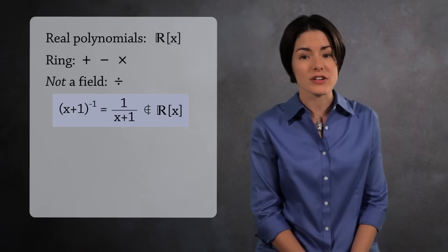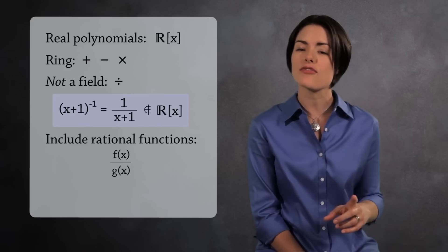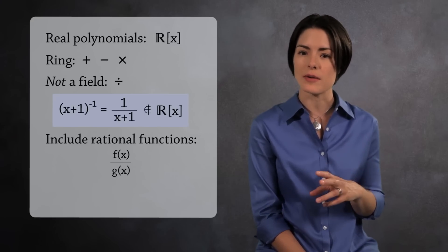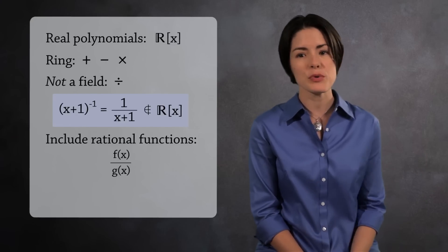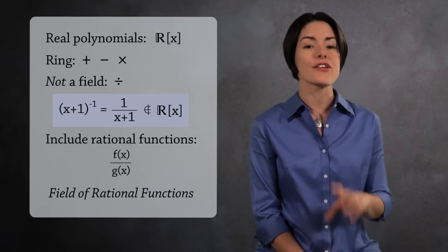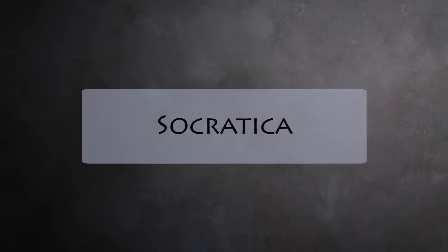But we can make this into a field if we expand our collection of polynomials to include rational functions. These are fractions where the numerator and denominator are polynomials. If we do this, then we can divide, and everything is commutative, so we have a field. The field of rational functions.